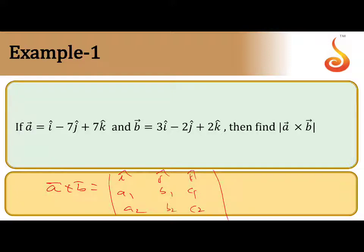The first row is i, j, k. The second row is components of the first vector. The third row is components of b vector. You should follow the order correctly.